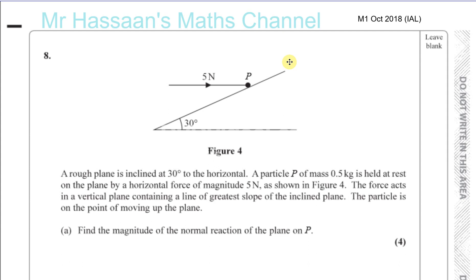We have a rough plane inclined at 30 degrees to the horizontal, and a particle P of mass 0.5 kg. So let's start putting these forces in. Particle P has weight 0.5g Newtons going down, and it is held at rest on the plane by a horizontal force of magnitude 5 Newtons.